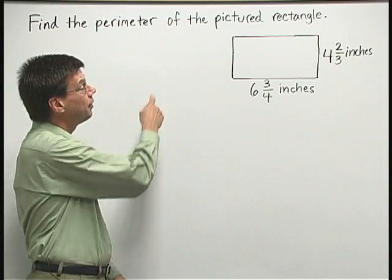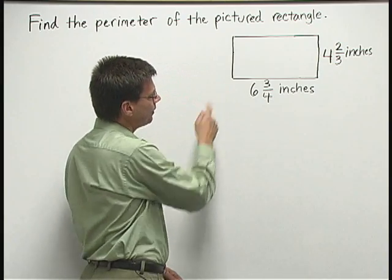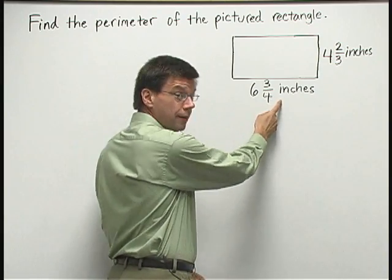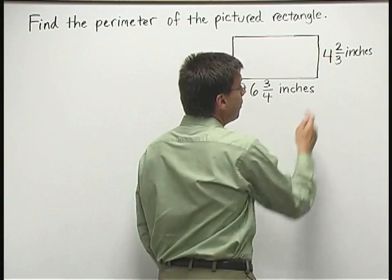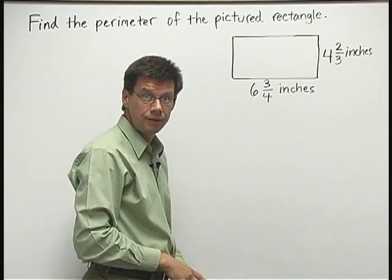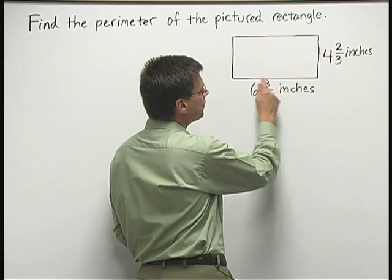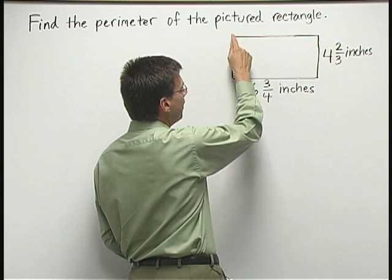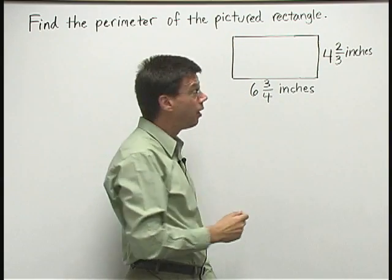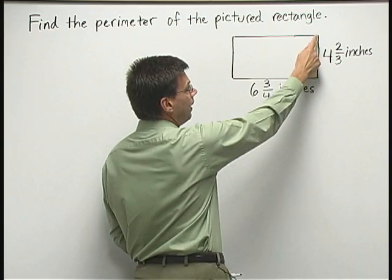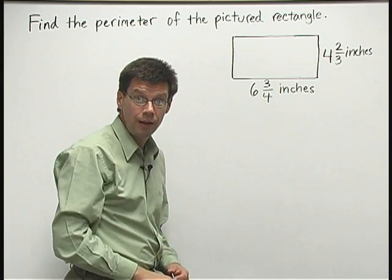Find the perimeter of the pictured rectangle. Here we have a rectangle with length six and three-fourths inches and width four and two-thirds inches. The perimeter is a measure of the distance all the way around the outside of the rectangle, and we can calculate the perimeter by adding up the lengths of the four sides. So let's go ahead and do that.